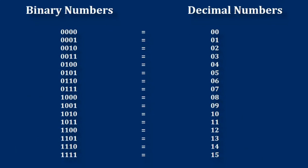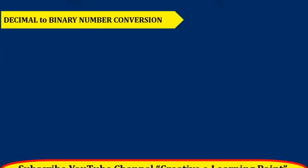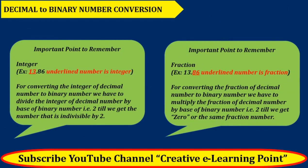These are a few binary numbers with their corresponding decimal numbers. The very first thing we need to know is what do you mean by integer and what do you mean by fraction. When a number is placed before the decimal point it is called an integer, and when the number is placed after the decimal point it is called a fraction. For converting the integer of a decimal number to binary, we divide by the base of binary number, which is 2, until we get a number indivisible by 2. For the fraction part, we multiply by 2 until we get 0 or the same fraction number.